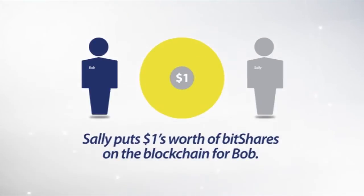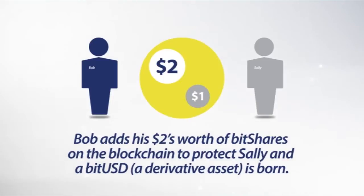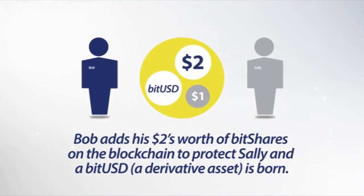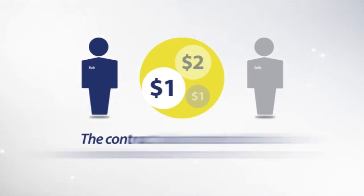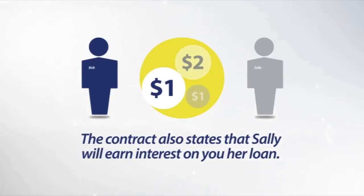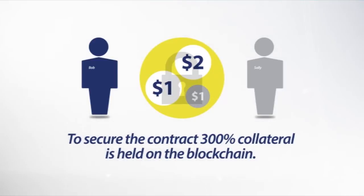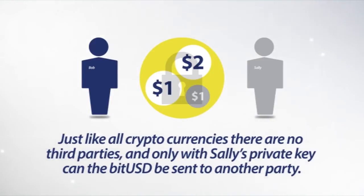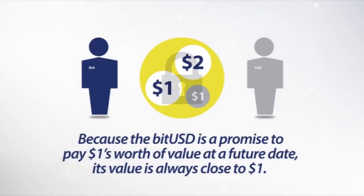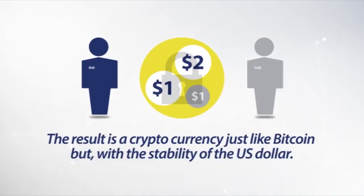Sally puts one dollar's worth of BitShares on the blockchain for Bob. Bob adds his two dollars worth of BitShares on the blockchain to protect Sally, and a BitUSD, a derivative asset, is born. A BitUSD is a derivative contract that promises one party — in this case Sally — one US dollar in value at any future date. The contract also states that Sally will earn interest on her loan. To secure the contract, 300% collateral is held on the blockchain. Sally holds this BitUSD in her online wallet. Just like all cryptocurrencies, there are no third parties and only with Sally's private key can the BitUSD be sent to another party. Because the BitUSD is a promise to pay one dollar's worth of value at a future date, its value is always very close to a dollar. The result is a cryptocurrency just like Bitcoin but with the stability of the US dollar.